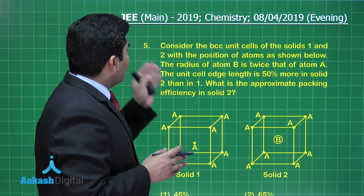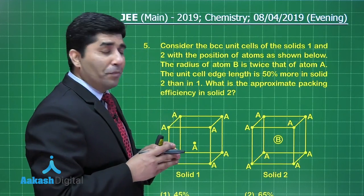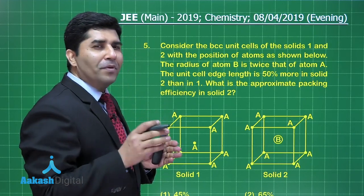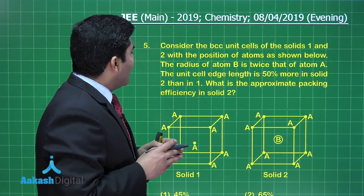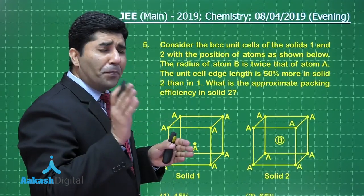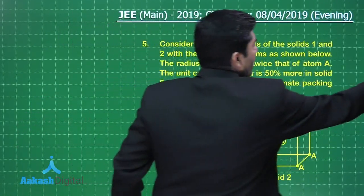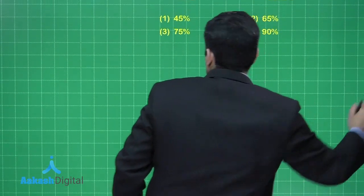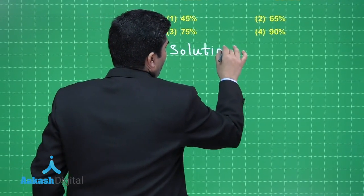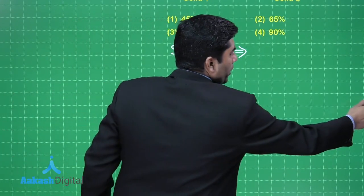The next question asks us to consider BCC unit cells of solids 1 and 2 with atoms positioned as shown. The radius of atom B is twice that of atom A. The unit cell edge length in solid 2 is 50% more than in solid 1. We need to find the approximate packing efficiency in solid 2. First, let us recall what we know about BCC structures.